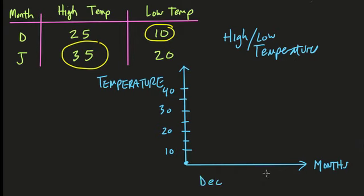Now, for December, there's two temperatures, a high and a low. So for the bar graph, what I would do is I would graph those out right next to each other.